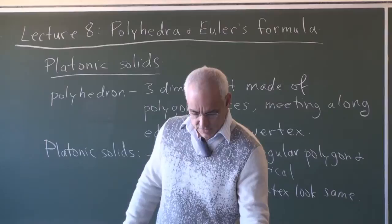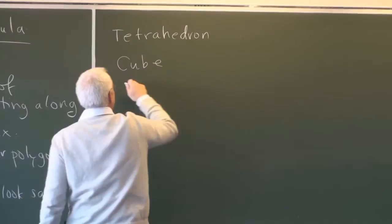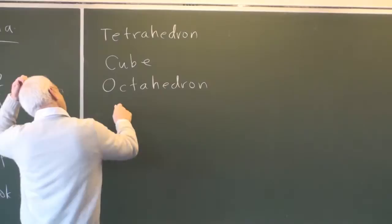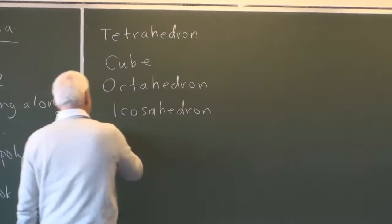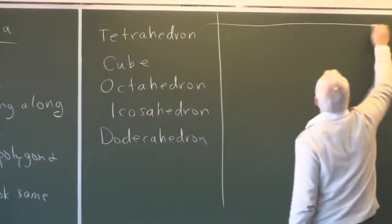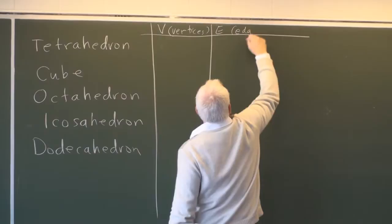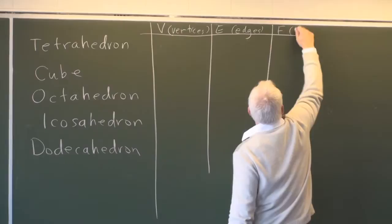So what are the five platonic solids? We have the tetrahedron, the cube, the octahedron, the icosahedron, and finally the dodecahedron. Let's make a table listing V for vertices, E for edges, and F for faces for each of these.